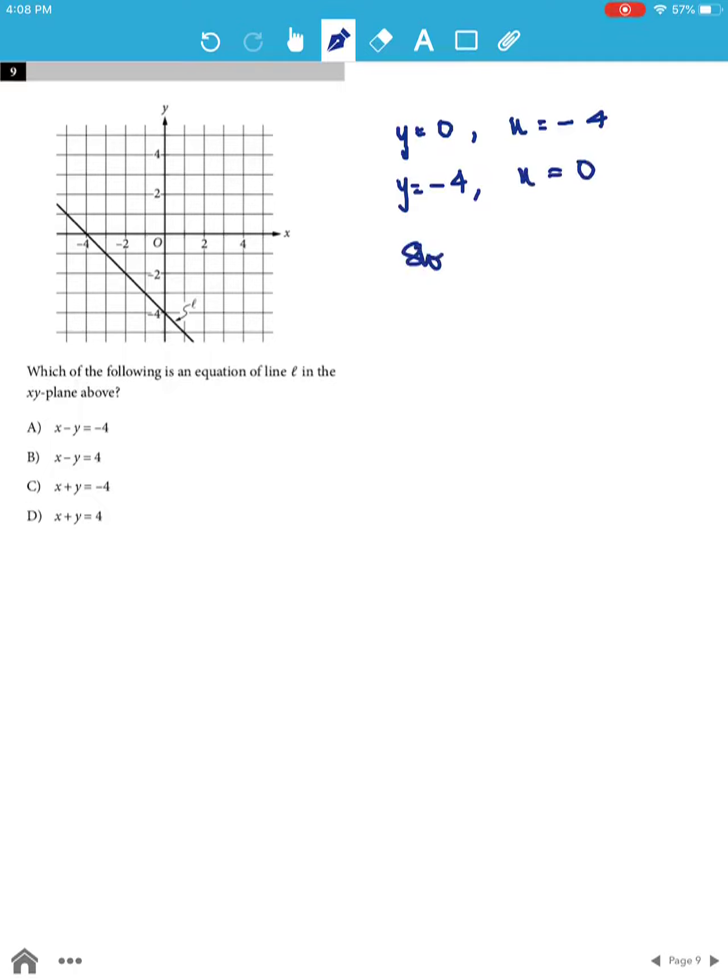Therefore, the slope of this line, y2 minus y1 over x2 minus x1, will be negative 4 minus 0 over 0 plus 4, which is equal to negative 4 over 4, that's equal to negative 1.